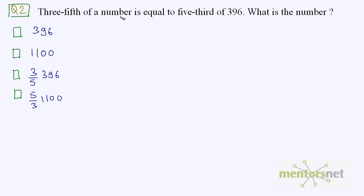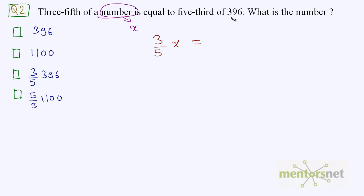Question 2: 3/5 of a number is equal to 5/3 of 396. What is the number? Let the number be x. It is said that 3/5 of a number, so we have 3/5 into x is equal to 5/3 of 396, which is 5/3 times 396. So this is the equation that we have got.